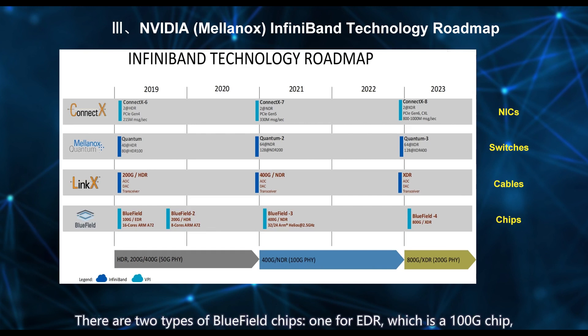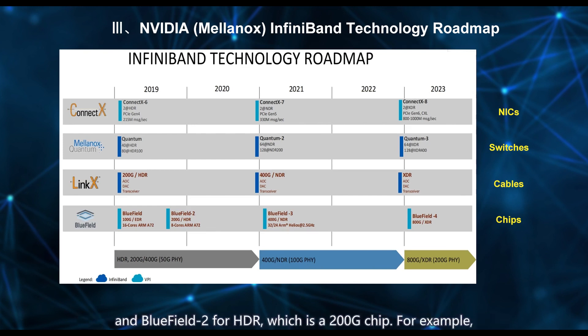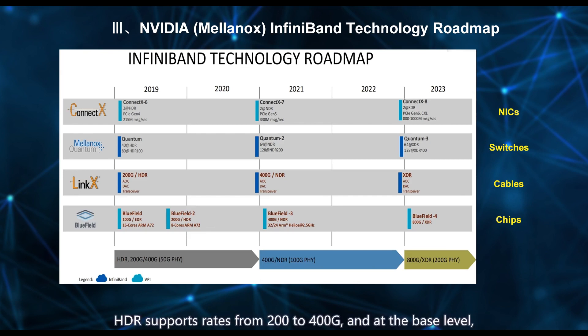There are two types of Bluefield chips: one for EDR, which is a 100G chip, and Bluefield 2 for HDR, which is a 200G chip. For example, HDR supports rates from 200 to 400G, and at the base level, it involves a physical chip design of 50G.